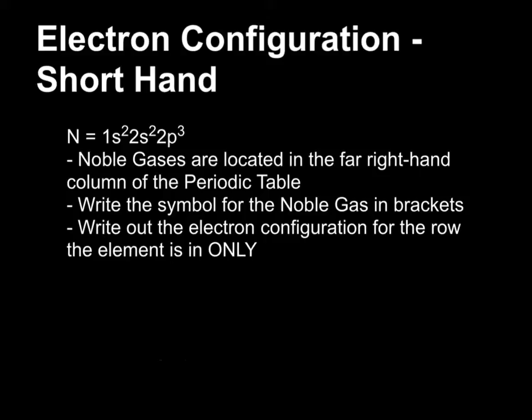So here's what you need to know. First of all, your noble gases are located in the far right hand column of the periodic table. Depending on how your periodic table is numbered, this is either going to be column 18 or column 8a. What we do is we write the symbol for the noble gas in brackets for the one that's in the row above the element that we're dealing with, so the row beforehand. Then we write out the electron configuration for the row the element is in only.